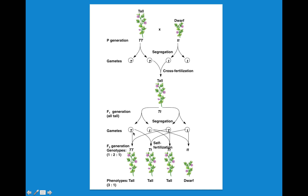When you self-fertilize, you can mix a big T with another big T, or a big T with a little t — those are the only combinations you can get. The ratio comes out to be one to two to one for the genotype, but a three to one ratio for the phenotype. And that's exactly what Mendel observed.